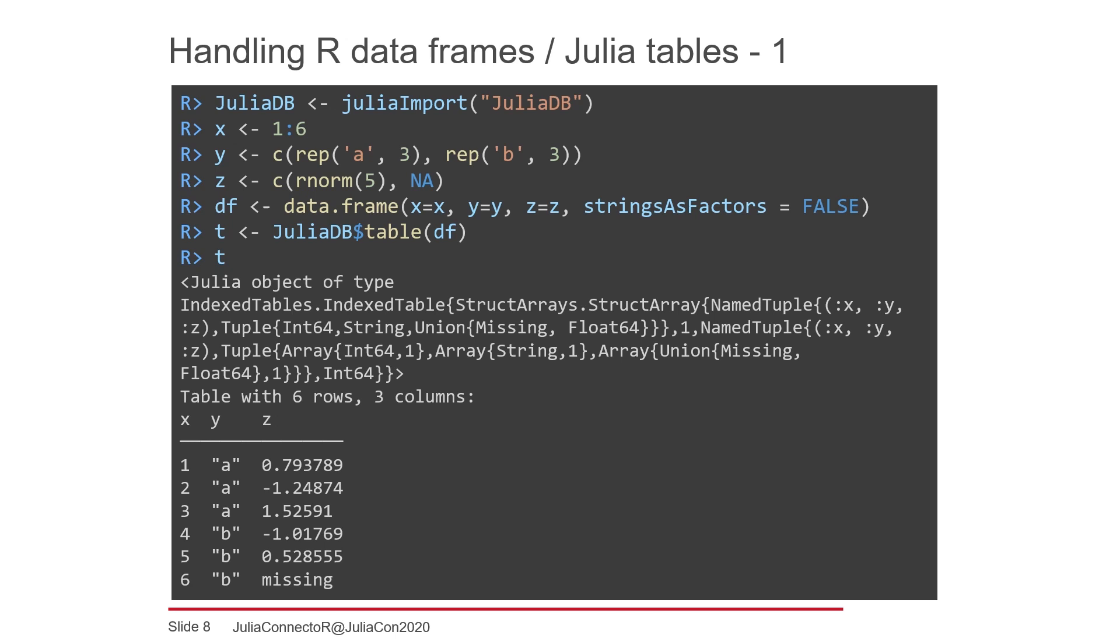The JuliaDB table function accepts any Julia structure that implements the tables interface to create a special index table. The JuliaConnector implements the tables interface for an R data frame, such that it can be passed to the JuliaDB table function. You can also see here that the JuliaConnector handles missing values, and will translate NA values in R to values of type missing in Julia.